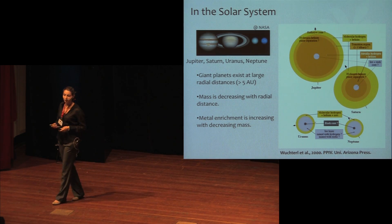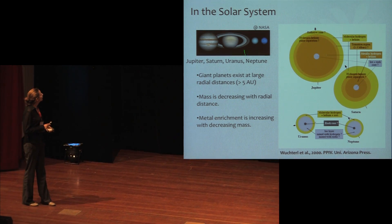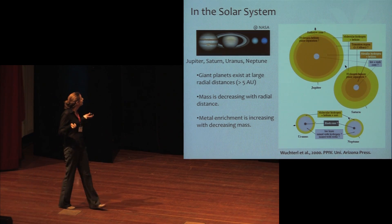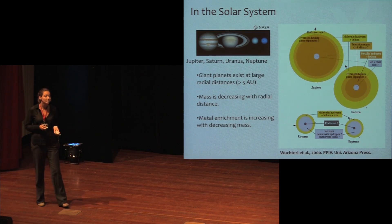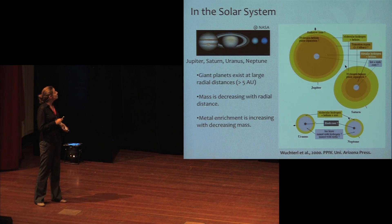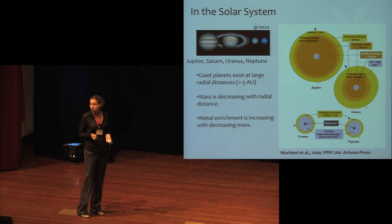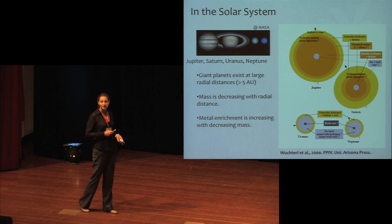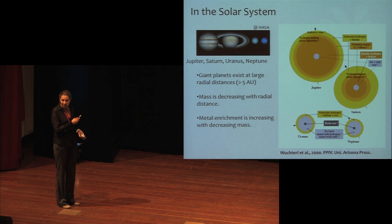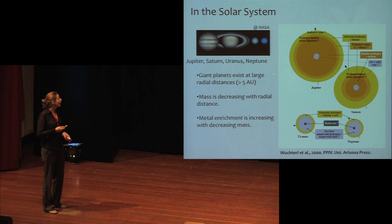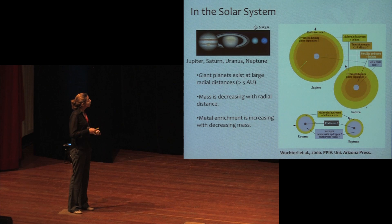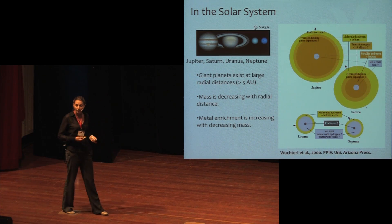Looking at the solar system planets — the two gas giants and the icy planets — the take-home message is that giant planets exist at relatively large radial distances, very different from the hot Jupiters observed. Mass is decreasing with radial distance, which gives constraints on formation models. But metal enrichment is actually increasing with radial distance, meaning Saturn has more metal enrichment relative to the Sun compared to Jupiter, and Uranus and Neptune are much more metal-rich — something we need to explain.